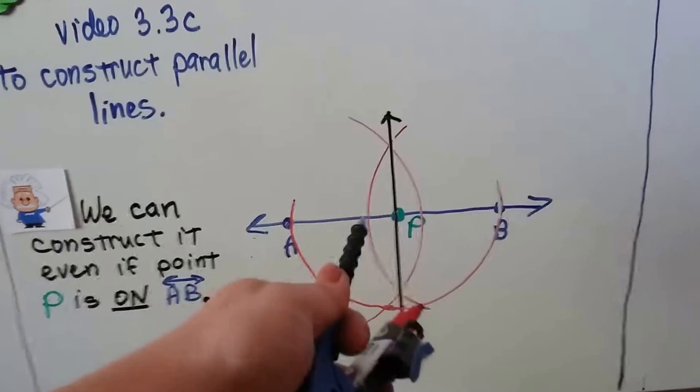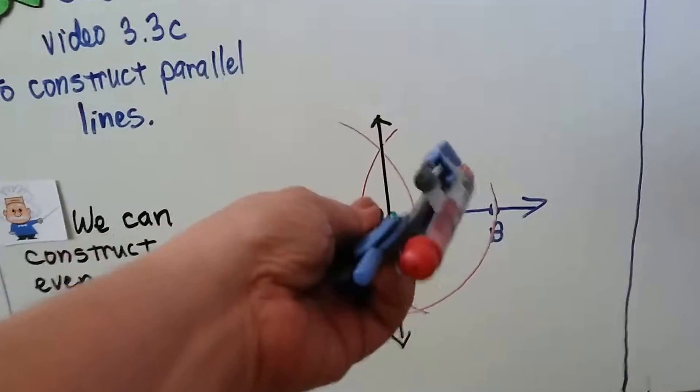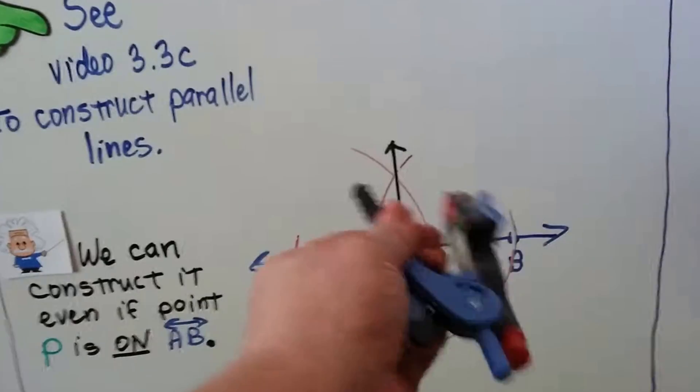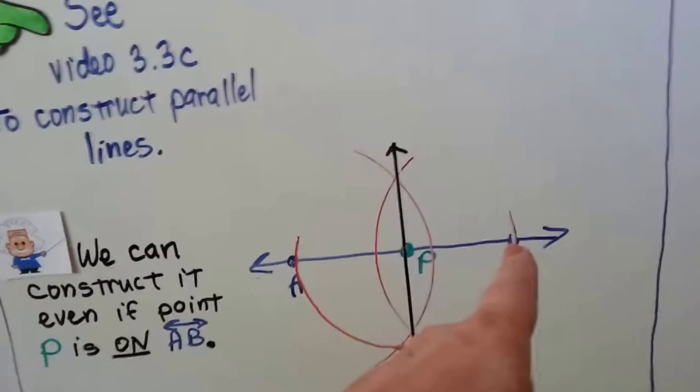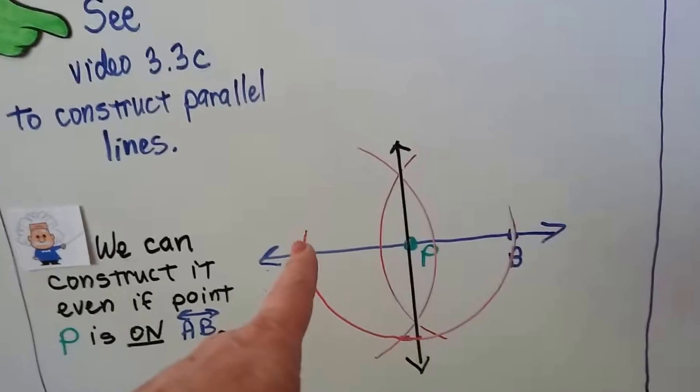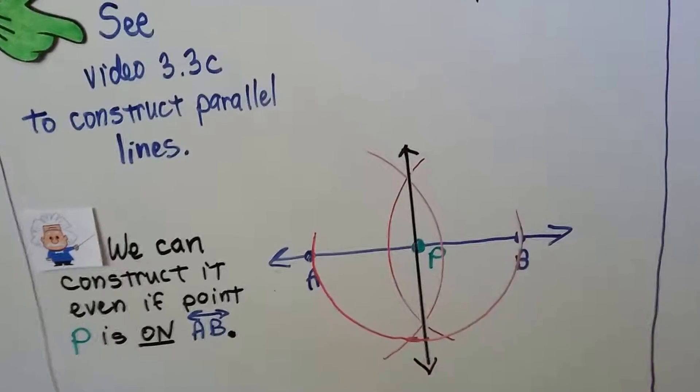All we have to do is put our compass on P and make swoops in each direction, a big swoop in each direction. So it's crossing the line here and it's crossing the line there and then we can mark those as A and B.